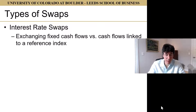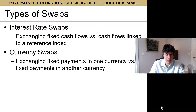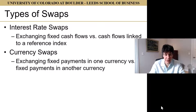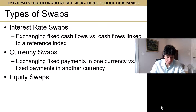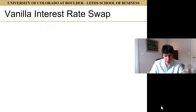There are lots of different types of swaps. We're going to talk about interest rate swaps, which typically exchange fixed, known cash flows versus cash flows linked to some reference index. Currency swaps — really what that original swap was — exchange fixed payments in one currency versus fixed payments in another. We can extend this to fixed payments in one currency versus a reference index in another. We also have equity swaps exchanging fixed cash flows versus the return on an equity index, and commodity swaps, among others.